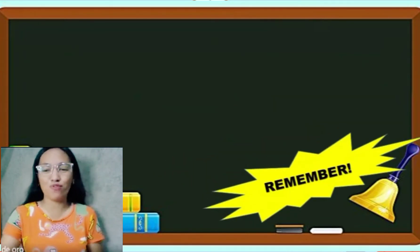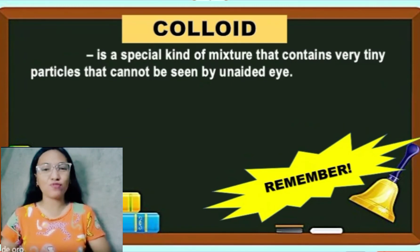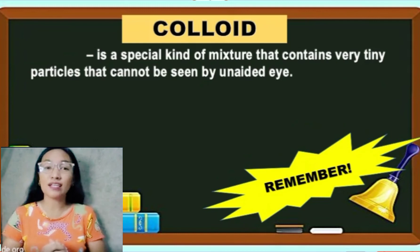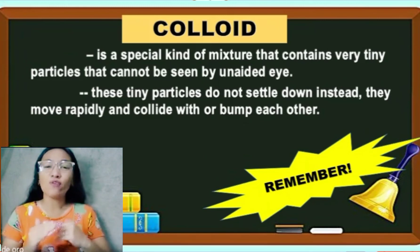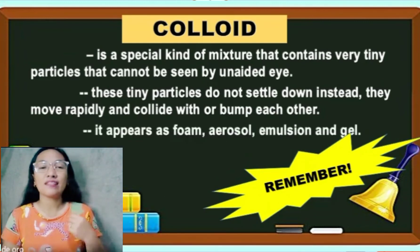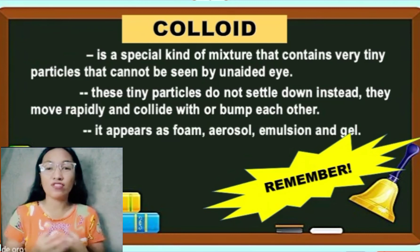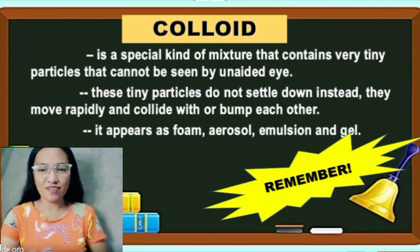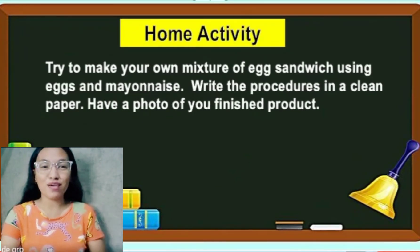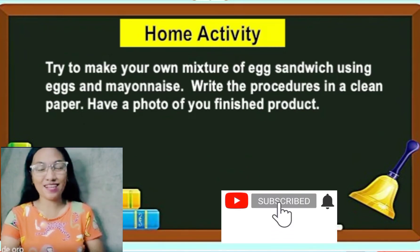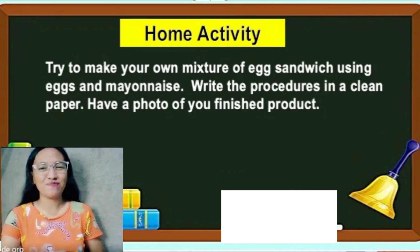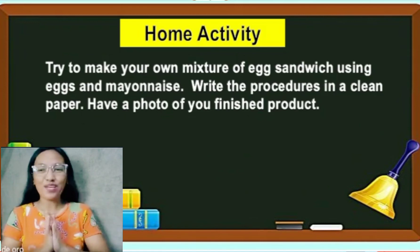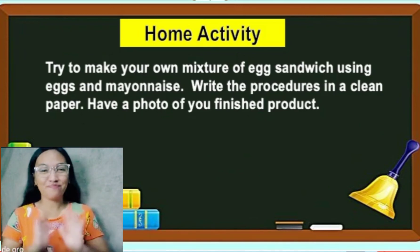You have to remember that colloid is a special kind of mixture that contains very tiny particles that cannot be seen by our unaided eye. These tiny particles do not settle down; instead, they move rapidly and collide or bump each other. Colloids appear as foam, aerosol, emulsion, and gel. For your home activity, try to make your own mixture of egg sandwich using eggs and mayonnaise. Write the procedure on a clean paper and take a photo of your finished product. That ends our lesson. I hope you learned something new today. Bye-bye!